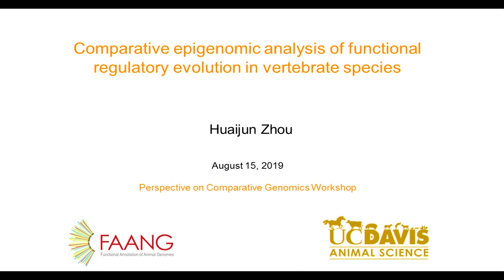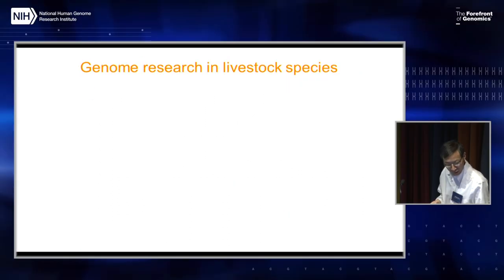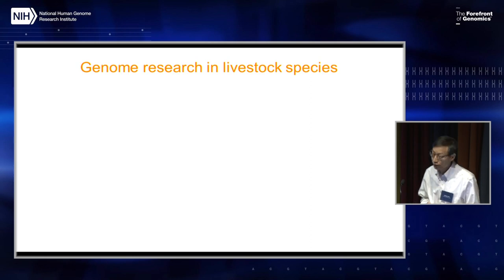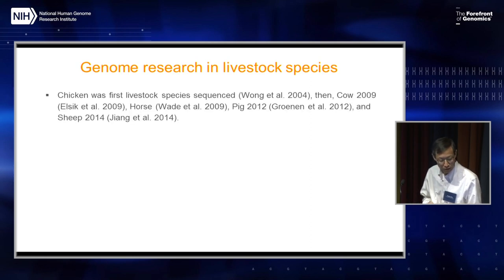This is my first attempt to do comparative genomics, so I'm not really in the area of comparative genomics. I tried to give some specific examples about what we are learning about comparative epigenomes. For people who are not familiar with agricultural species, I'd like to provide some background about those species.